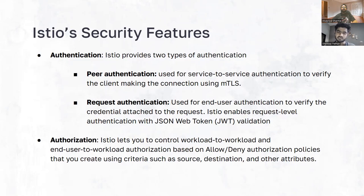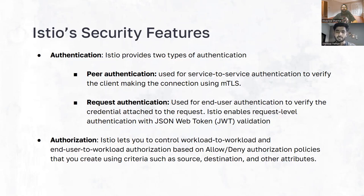The next part of this process is authorization. Istio provides authorization through a simple custom resource called the authorization policy, which lets us control workload-to-workload and end-user-to-workload traffic. We can define multiple policies for our services in our mesh and control how our services can authorize end users or services communicating from the same cluster. There are basically three types of actions we can perform using authorization: allow, deny, and custom actions.